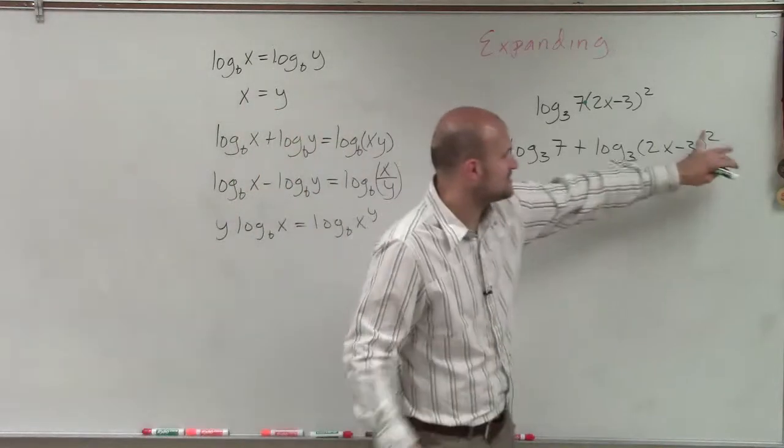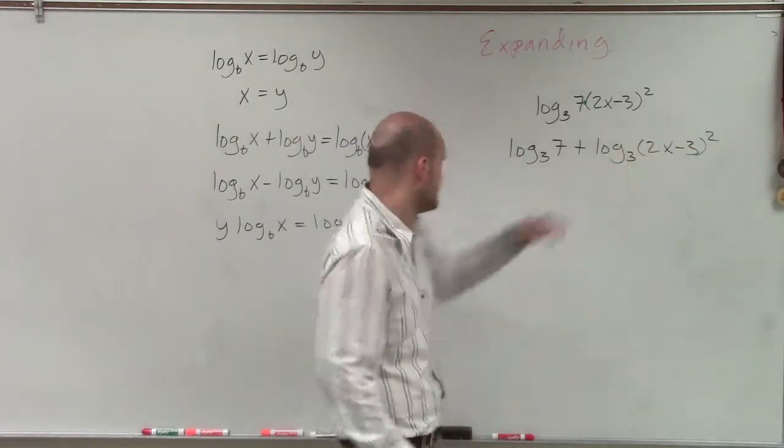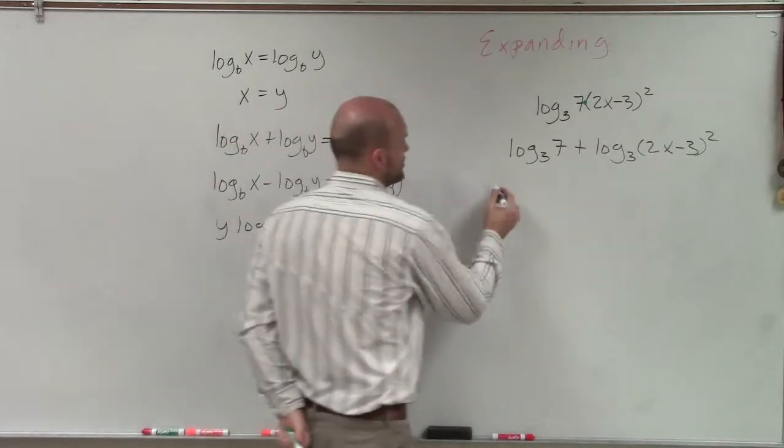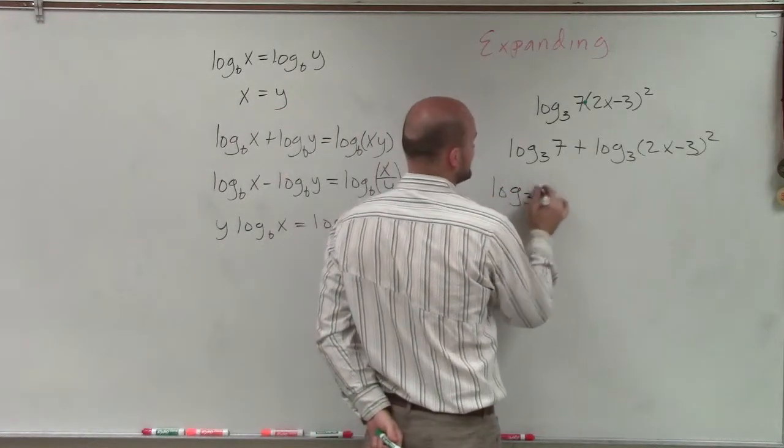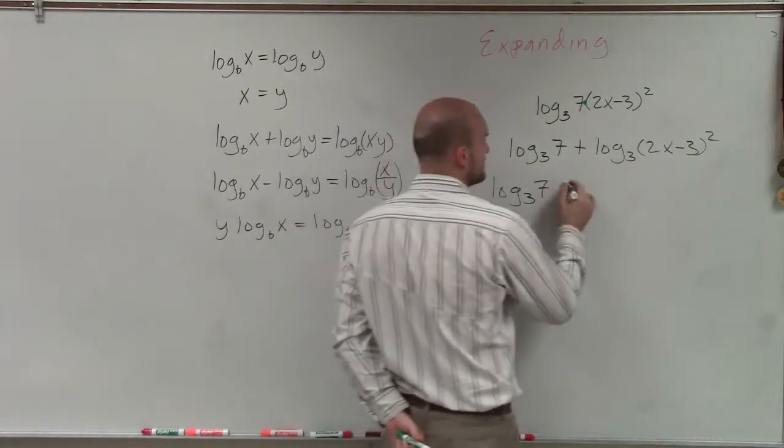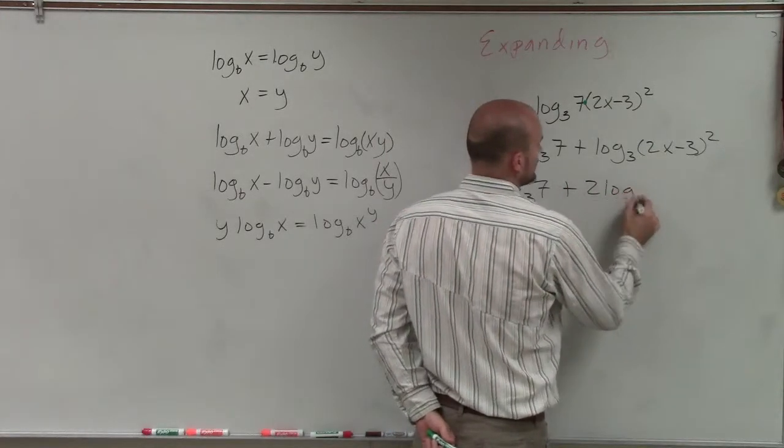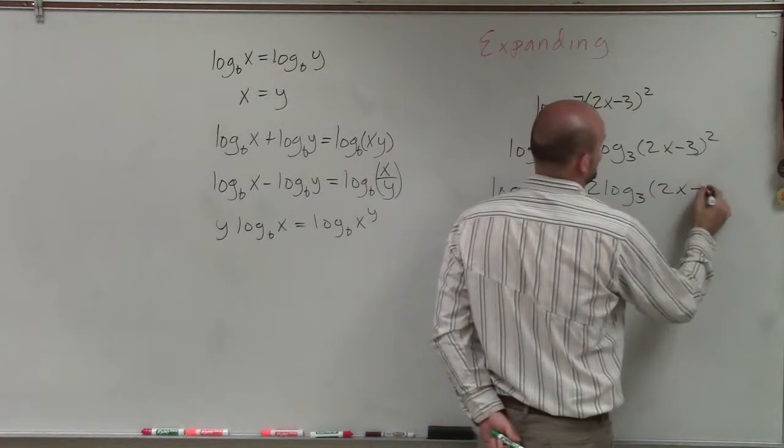And now, the last step is I take my exponents, and I can rewrite those in front by applying this property of logarithm. So therefore, my final expanded expression is log base 3 of 7 plus 2 log base 3 of 2x minus 3.